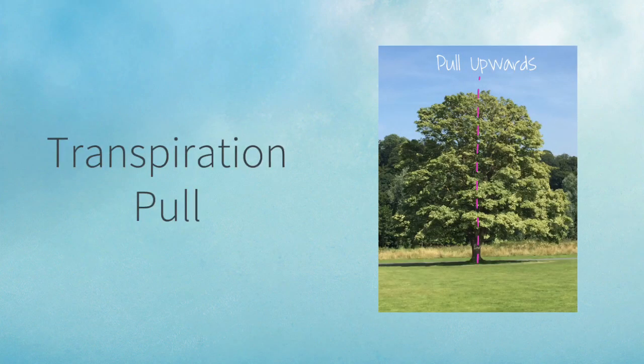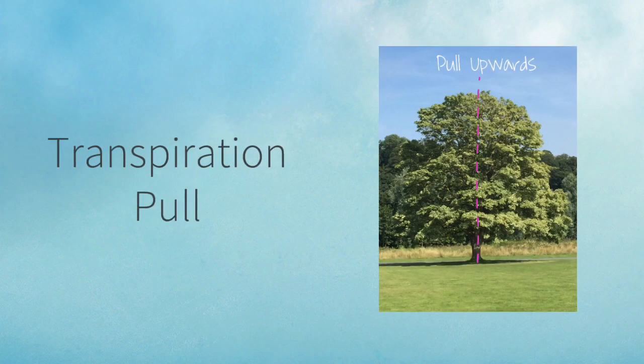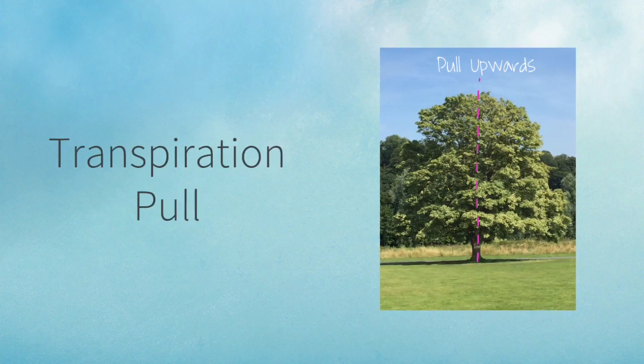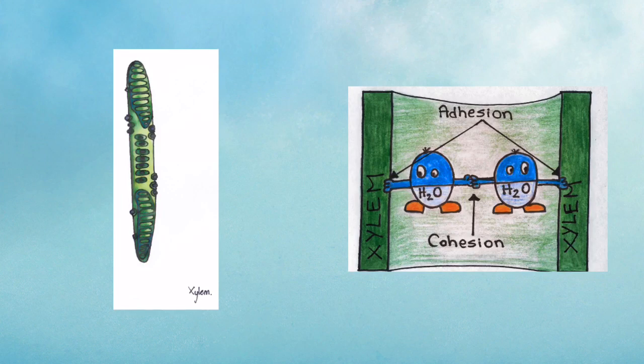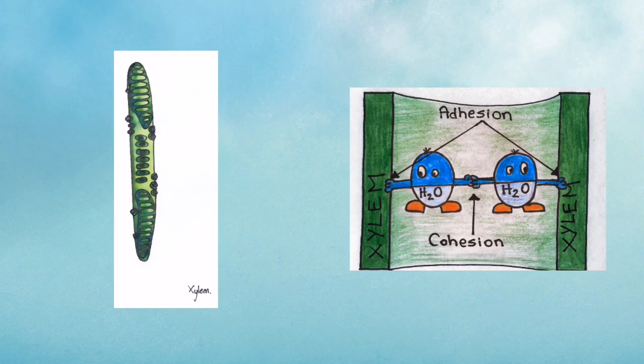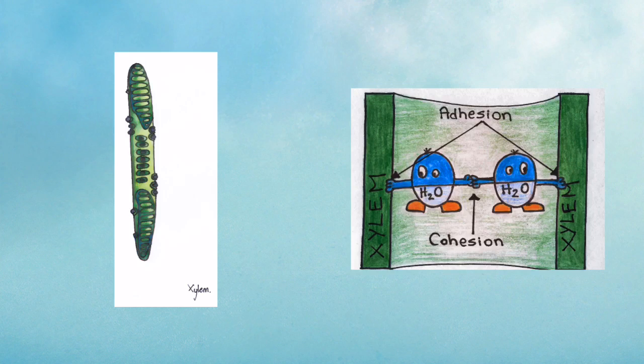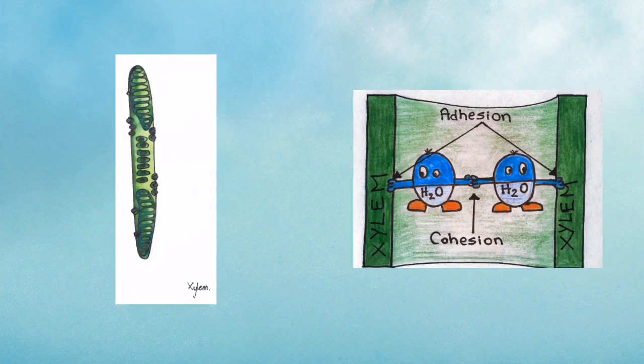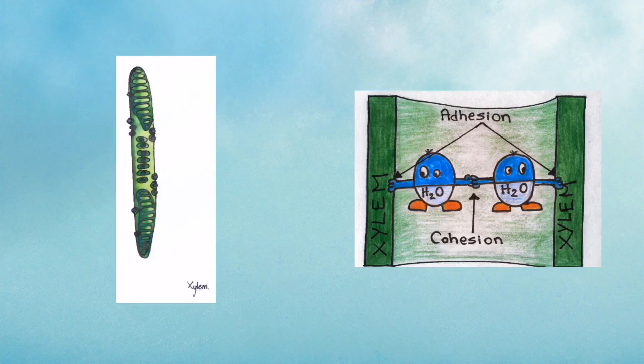Let's now consider this transpirational pull. So transpiration is resulting in this chain of water molecules being pulled upwards through the plant. And remember that water is behaving like a chain because of the cohesive forces between the water molecules, and not forgetting those adhesive forces between the water molecules and the walls of the xylem vessels and tracheids.